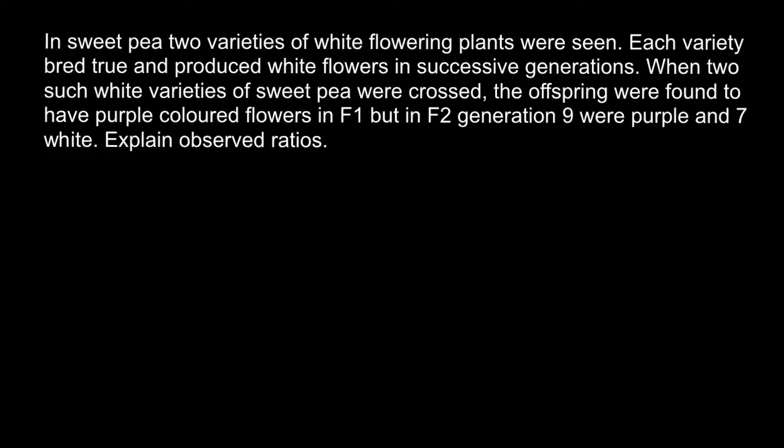First of all, true breeding means that when we cross a plant with itself, or self-pollinate, in the following generations this plant would show the same traits. So if it is white, all the following generations would also be white — we don't have any other alleles that may make combinations that would make the flower purple.